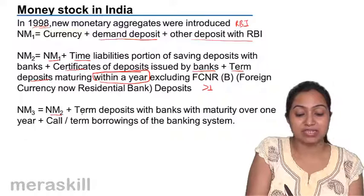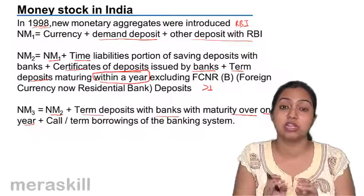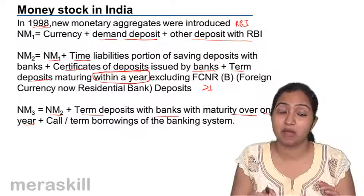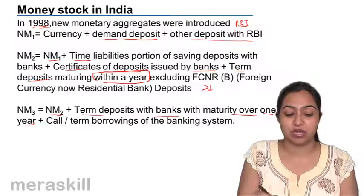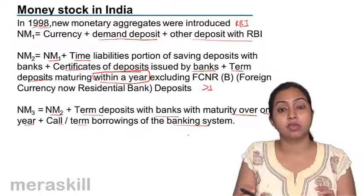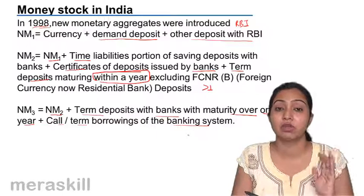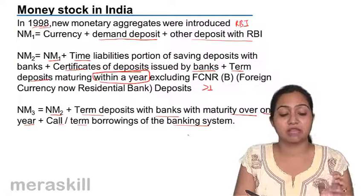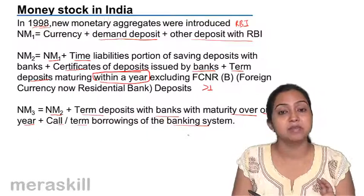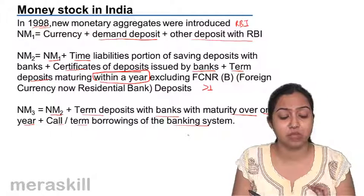NM3 is NM2 plus term deposits with banks with maturity over one year. Call term borrowings of the banking system are also included — call borrowings means whenever they want, they can ask for their money back. When we include that in NM2 along with term deposits with maturity of over one year, it becomes NM3. The recent aggregates that RBI follows are NM1, NM2, and NM3.